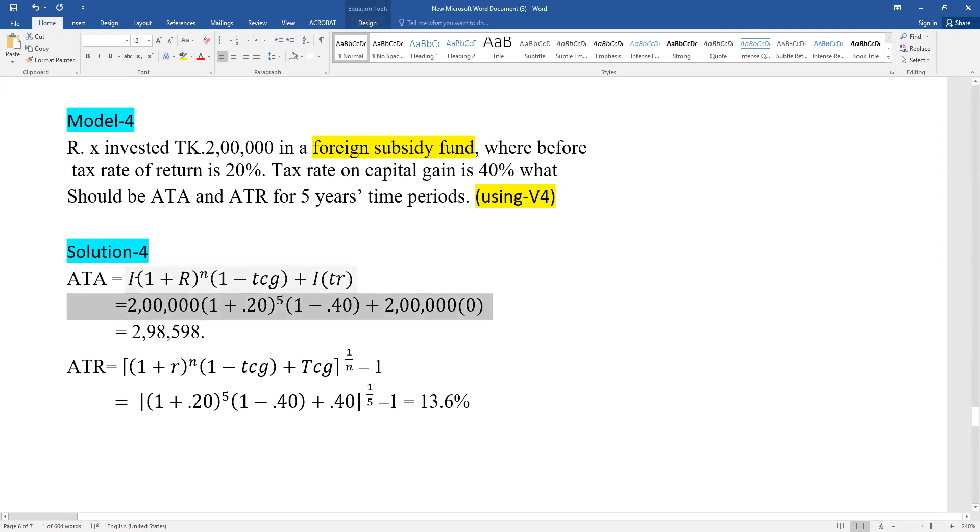So ATA is: investment times (1 + r)^n times (1 - capital gain tax) plus investment times tax rate. With investment of 2 lakh: (1 + 0.20)^5 times (1 - 0.40) plus investment times tax rate.